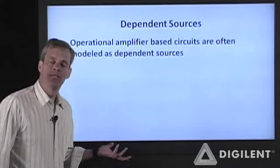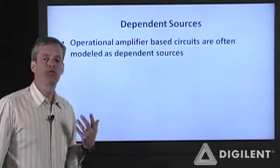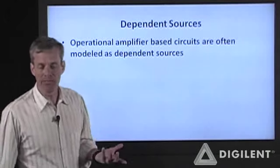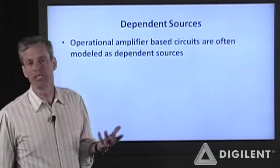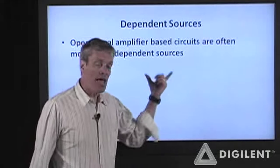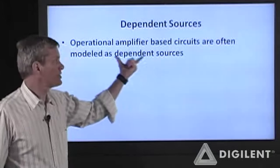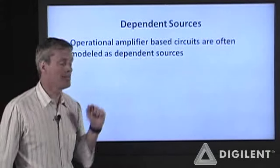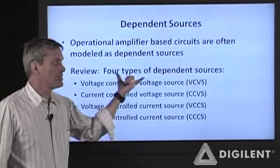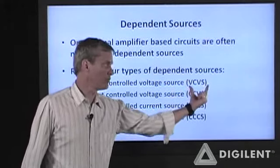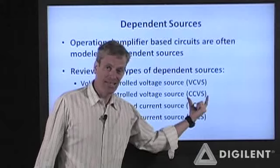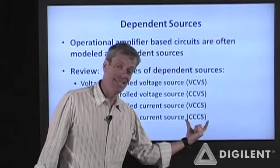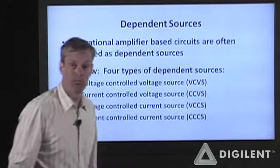Now let's talk about dependent sources in more detail. In Lecture 2, I mentioned ideal voltage sources and dependent sources, with four different categories. They are somewhat mysterious unless you have a way to implement them. With operational amplifiers, we now have a way to implement a dependent source — quite often an op-amp circuit gets modeled as a dependent source. The four basic types are: voltage-controlled voltage source (VCVS), current-controlled voltage source (CCVS), voltage-controlled current source (VCCS), and current-controlled current source (CCCS).